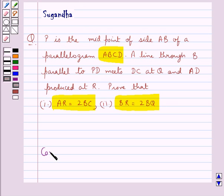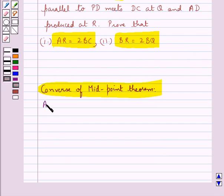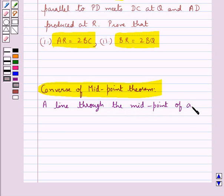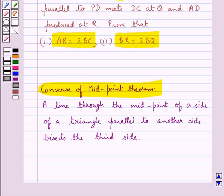Before moving on to the solution, let's state the converse of the midpoint theorem. According to this, a line through the midpoint of a side of a triangle parallel to another side bisects the third side. This is the key idea for this question.